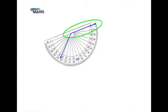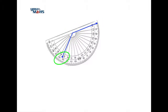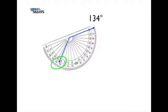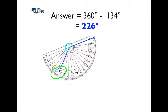In this case the zero is on the outside of the protractor. We then use the numbers on the outside to measure in a clockwise direction until we find where the next ray of the angle is. We can see this occurs at approximately 134 degrees. But to find the reflex angle, we subtract 134 degrees from 360, leaving us with a final answer of 226 degrees.